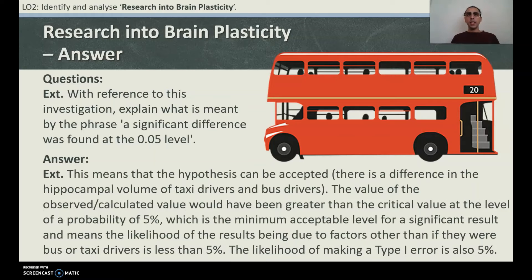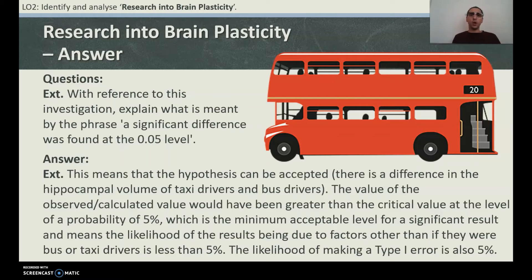Extension question: With reference to this investigation, explain what is meant by 'a significant difference was found at the 0.05 level.' This means the hypothesis can be accepted — there is a difference in the hippocampal volume of taxi drivers versus bus drivers. The observed or calculated value would have been greater than the critical value at a probability of 5% (p = 0.05), which is the minimum acceptable level for a significant result. This means the likelihood of results being due to chance factors is less than 5%, and the likelihood of making a Type 1 error is also 5%.